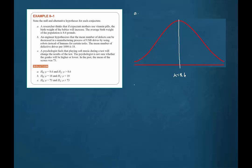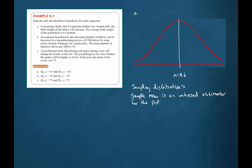We know from our study of sampling distributions, and from the fact that the sample mean is an unbiased estimator for the population mean, that the population mean would be right here in the middle of the sampling distribution.